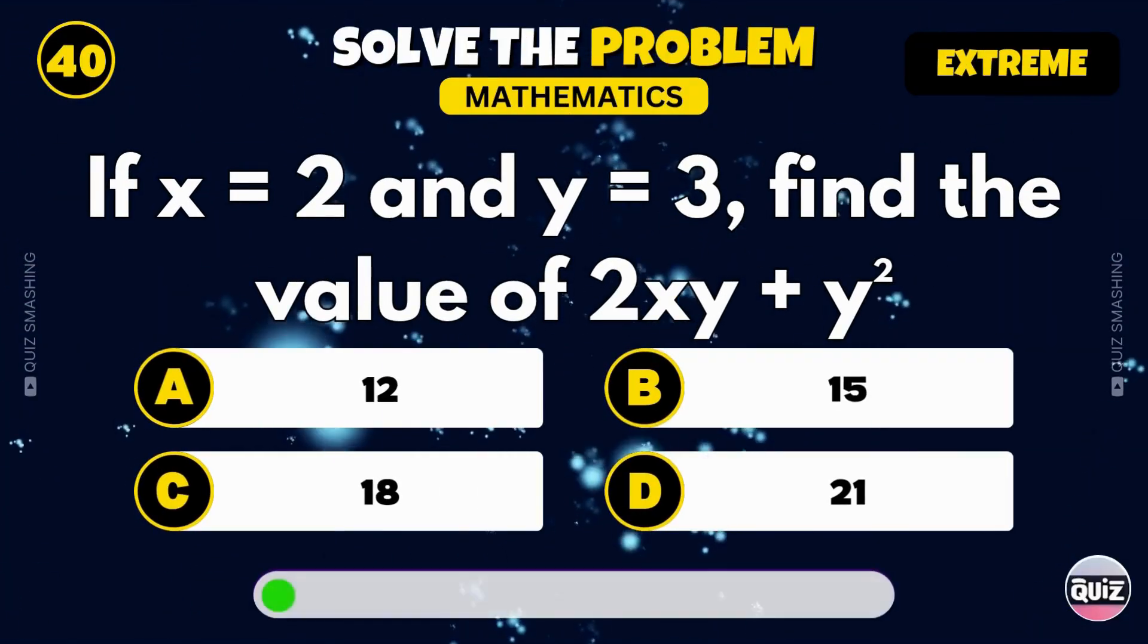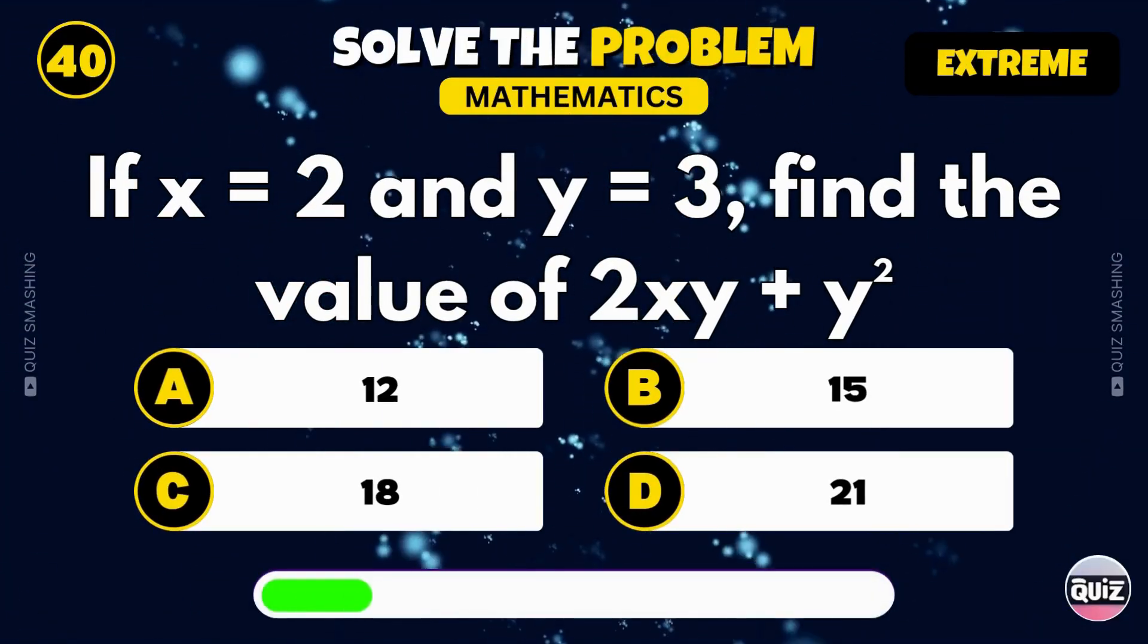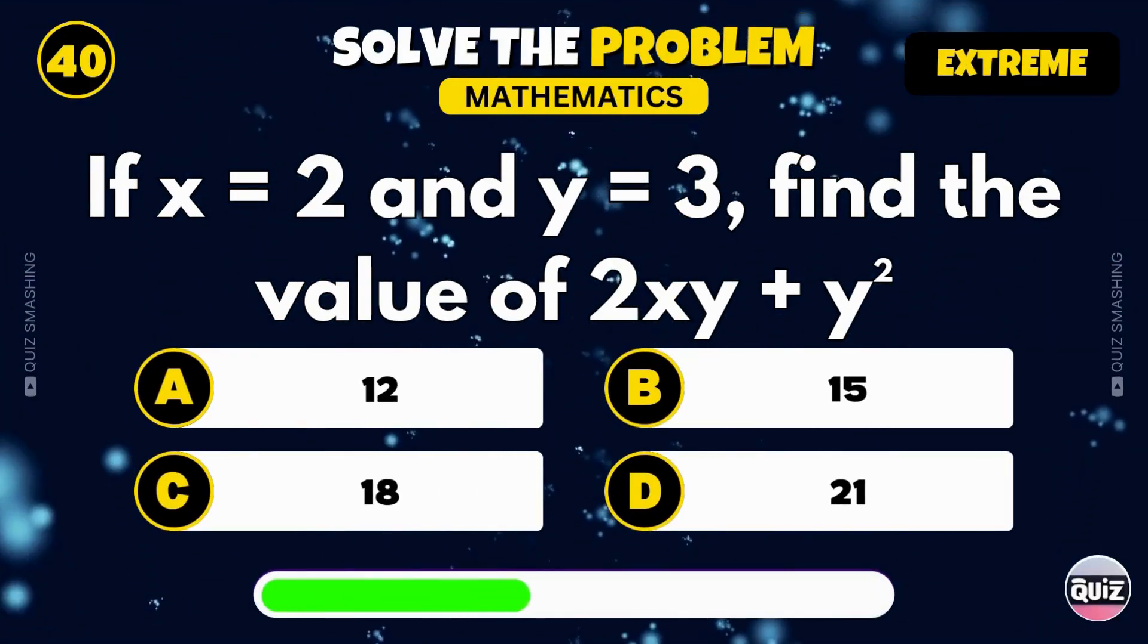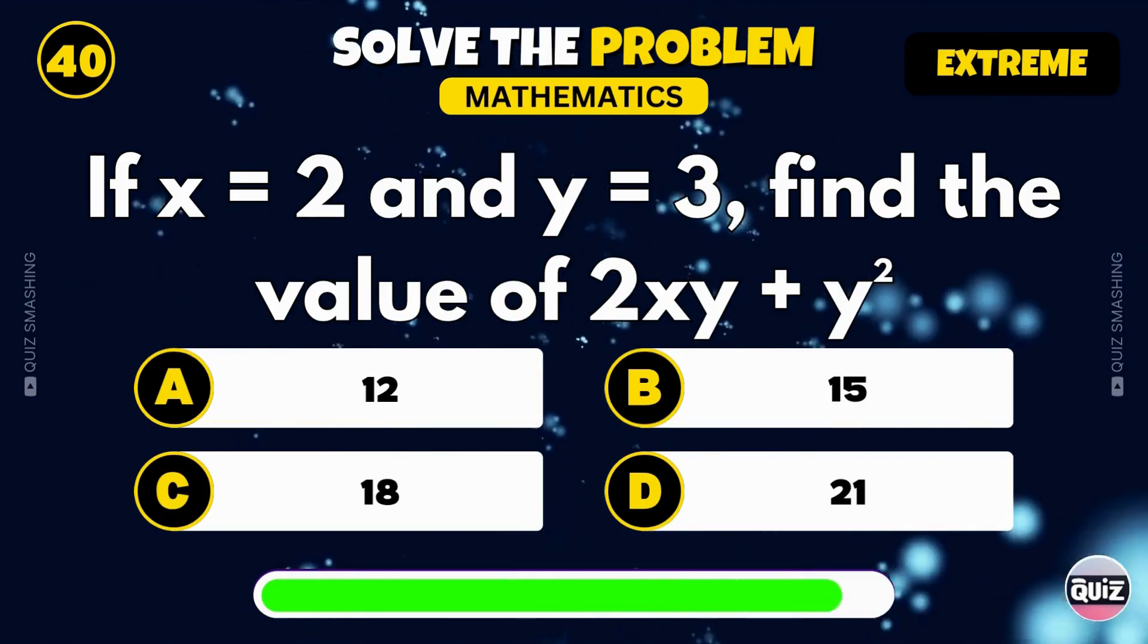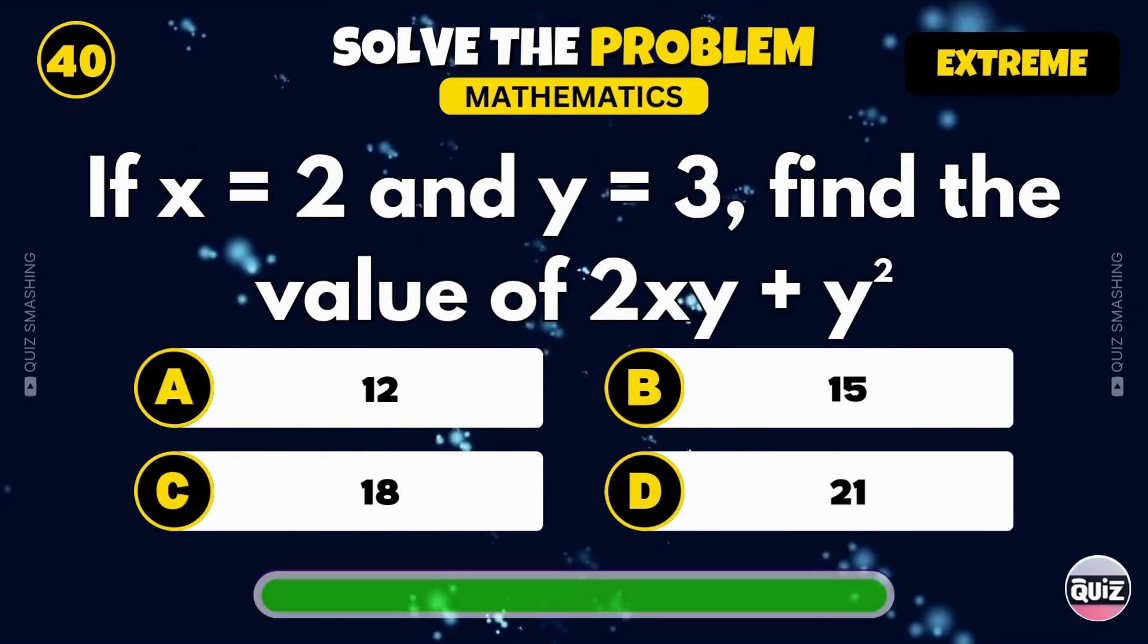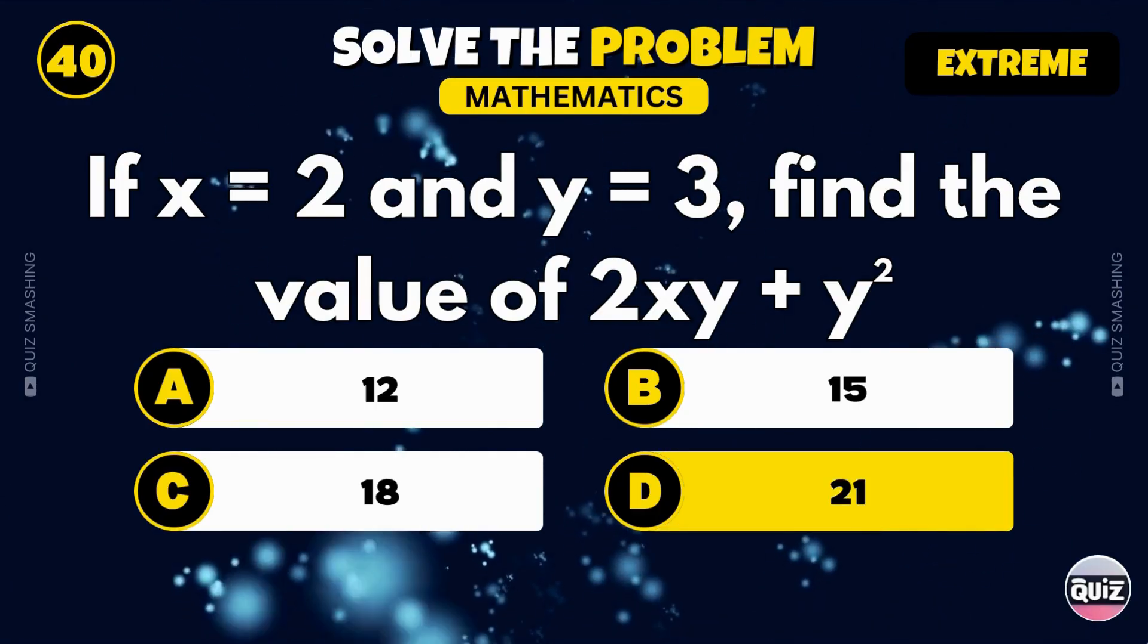If x equals 2 and y equals 3, find the value of 2xy plus y squared. You got it, the value is 21. Great job! How many of the 40 math questions did you get right? Drop your score in the comments, and don't forget to subscribe for more fun and educative quizzes from Quiz Smashing. See you in the next one!